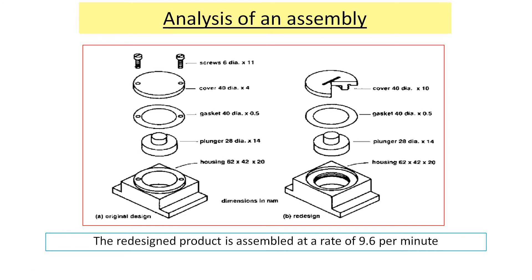Now let's try to understand the analysis of an assembly. Before assembling any product, we need to know its components and the flow chart — the sequence in which that assembly will be done. As you can observe in this original design, there is a housing, plunger, gasket, and cover, with screws to be fitted on top. The problem here is that if we want to assemble all of these at one workstation, the operator must ensure that the gasket holes on the left and right align with the housing holes.